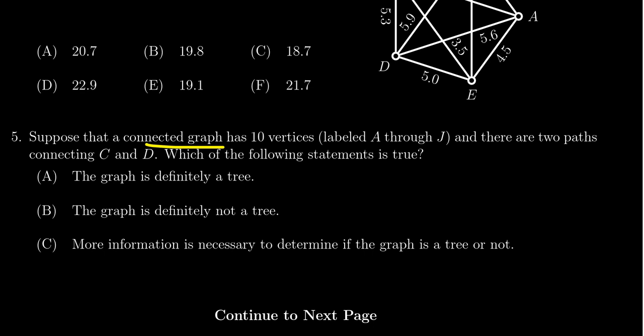Suppose that a connected graph has 10 vertices labeled A through J, and there are two paths connecting C and D. What can we say about this graph?